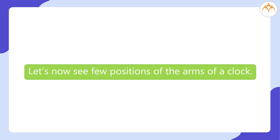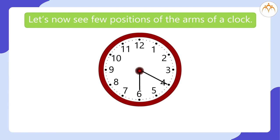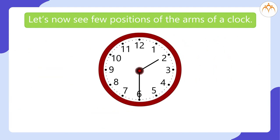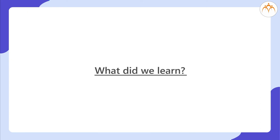Let's now see a few positions of the arms of a clock. At 5:45, there is a right angle. At 6:20, there is an acute angle. At 2:30, there is an obtuse angle.